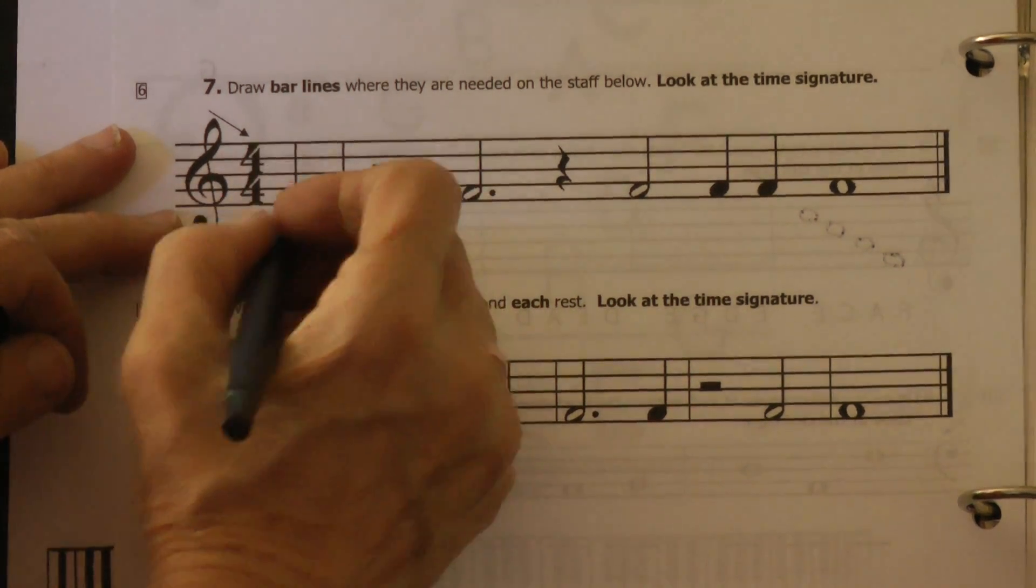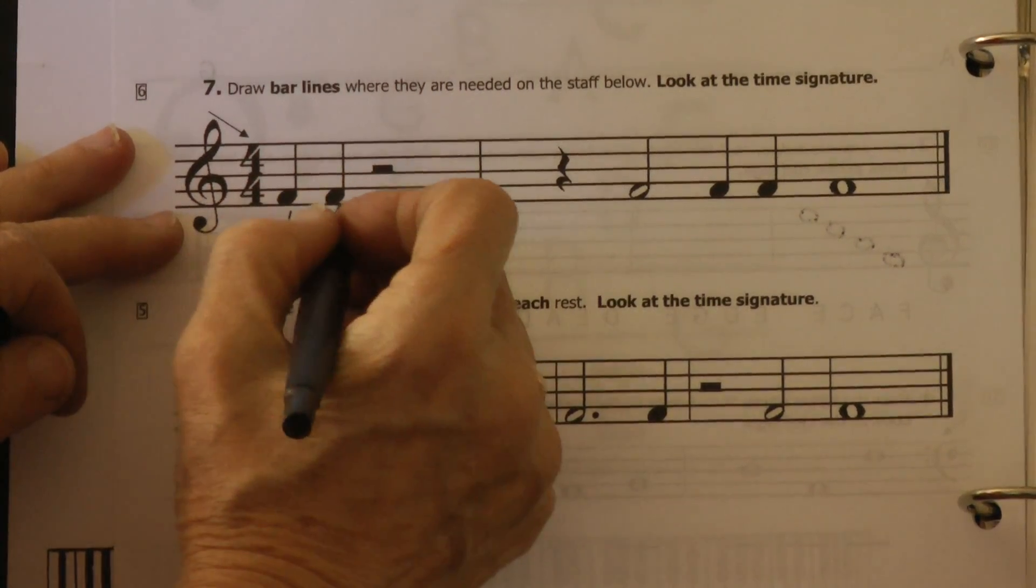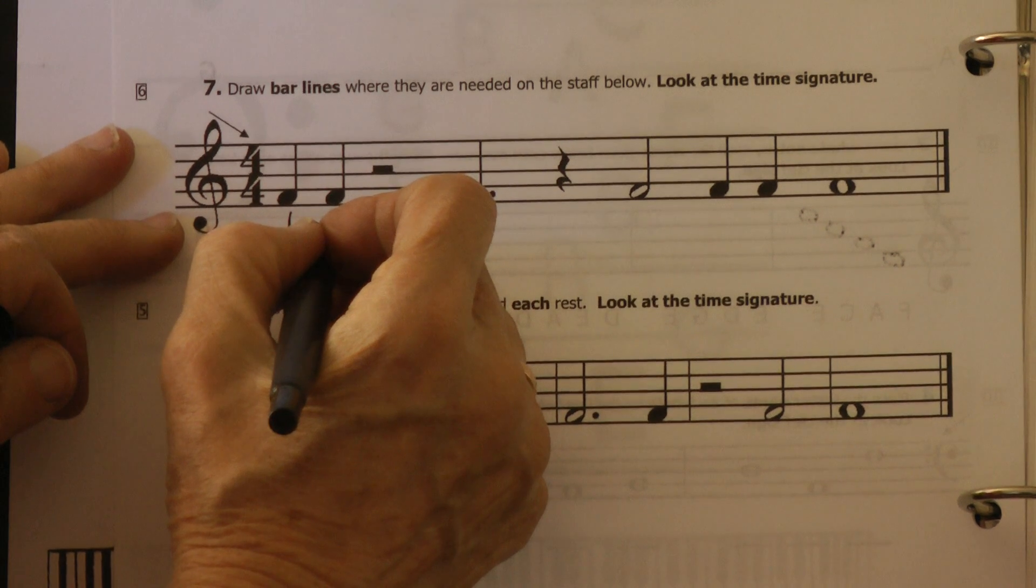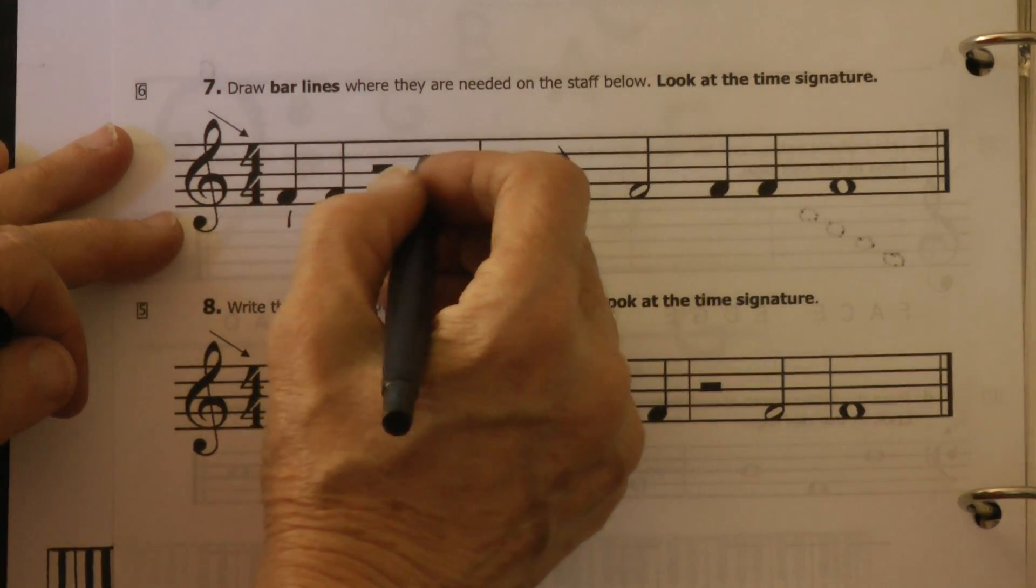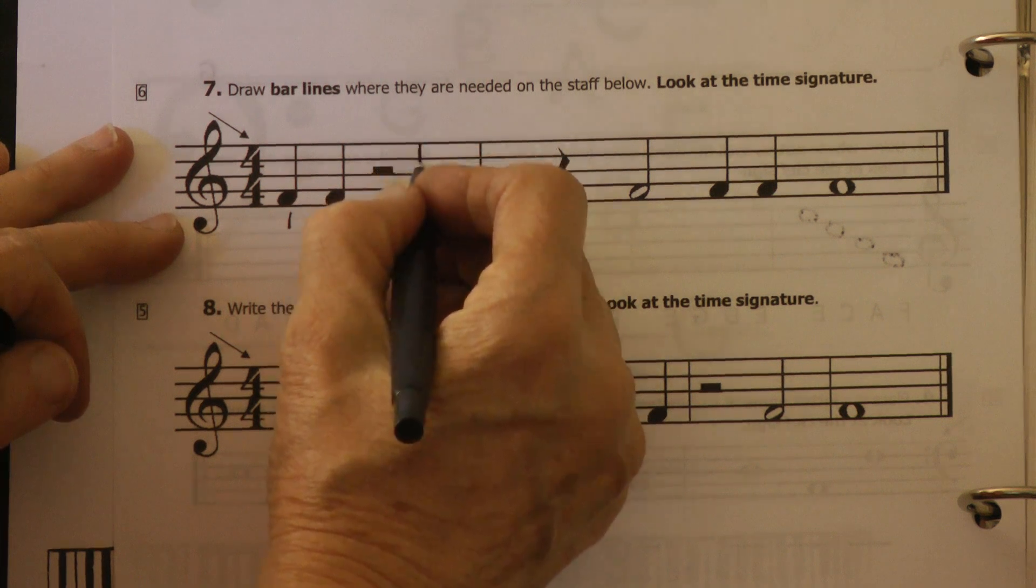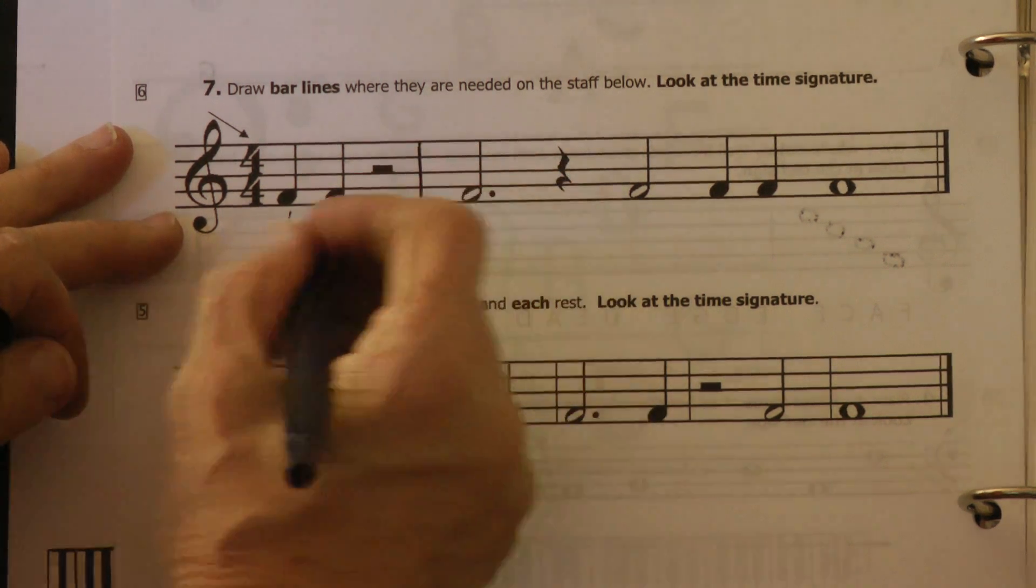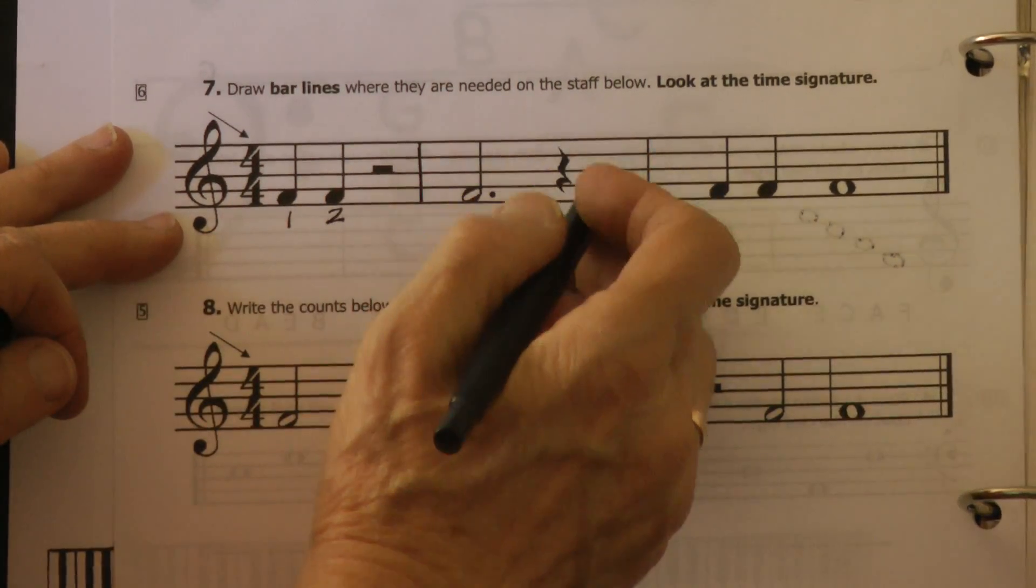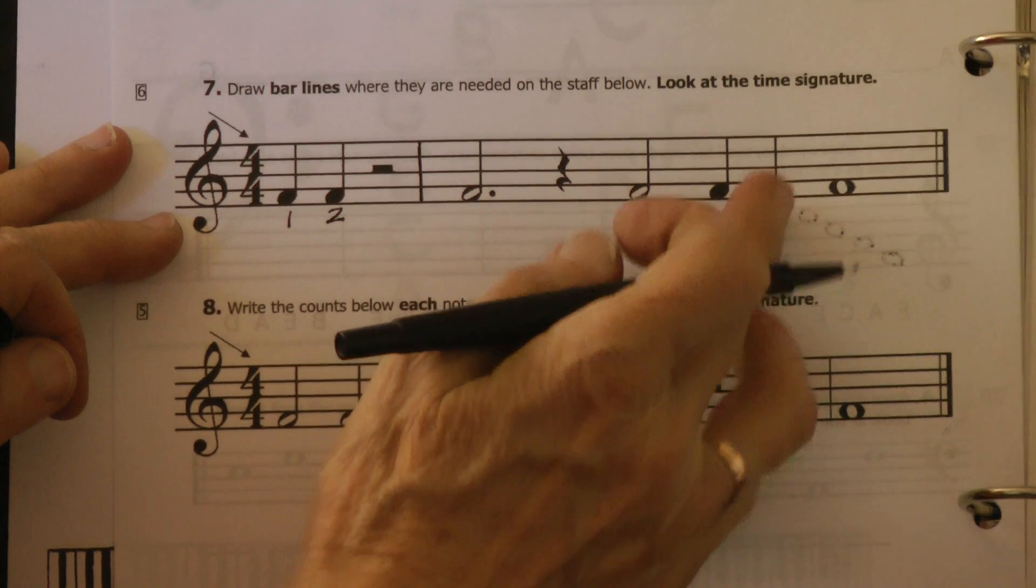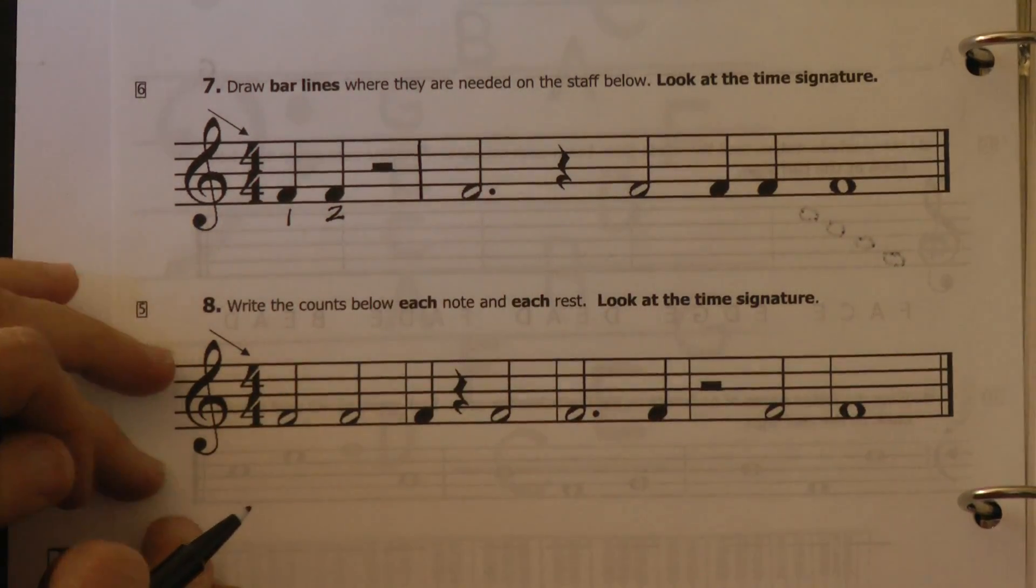Here's one beat, so you're going to write one. Here's another quarter note. That's your second beat in that measure. Here's three, four, and we want bar lines, so actually you don't have to write the numbers. Just be able to count them. One, two, three, four, bar line. One, two, three, four, bar line, and then whole.